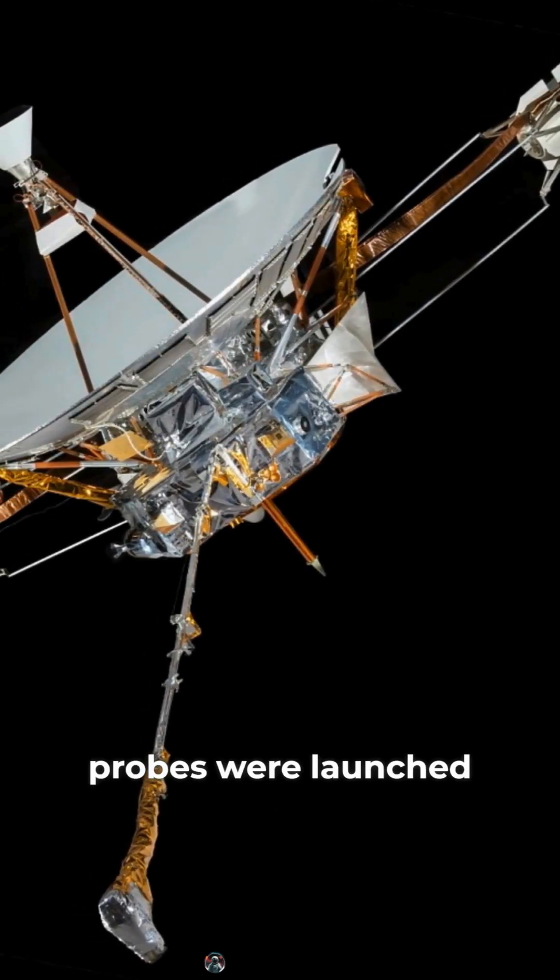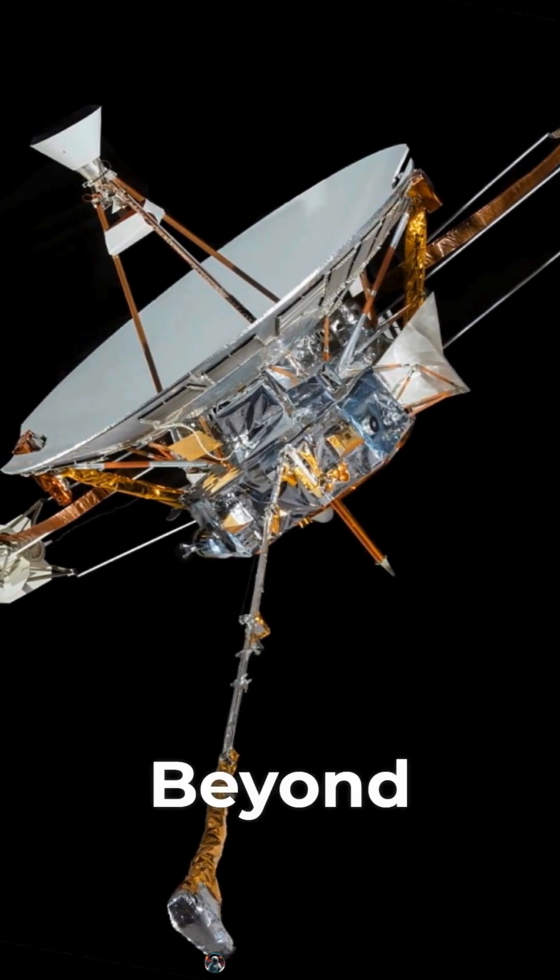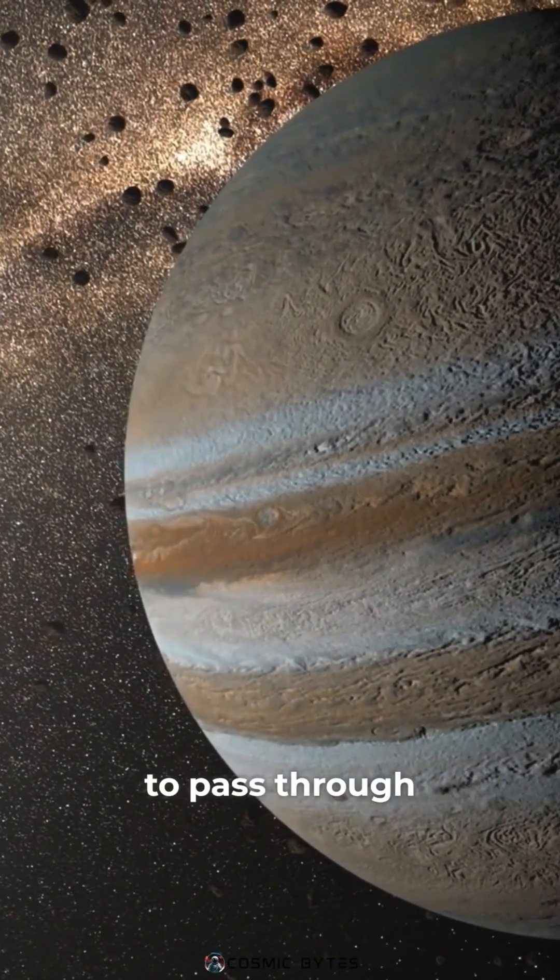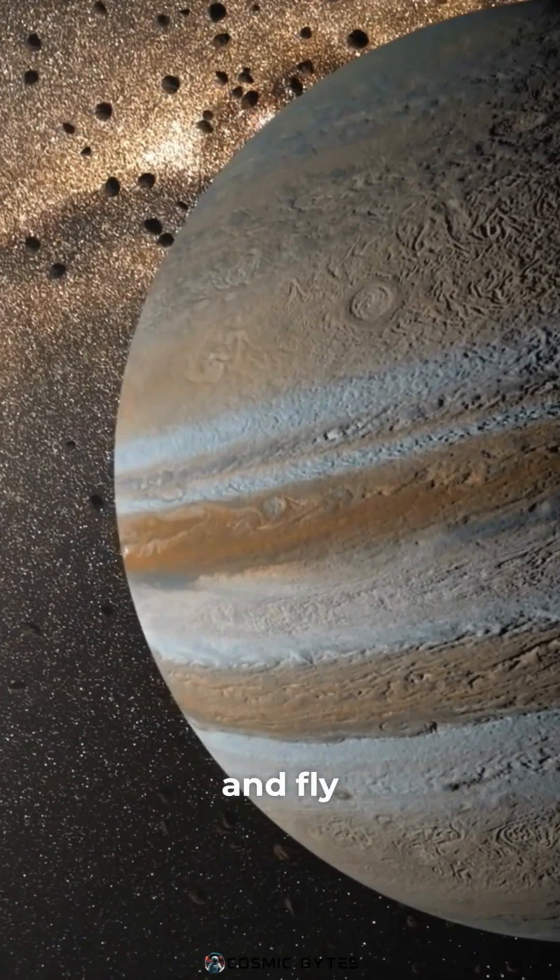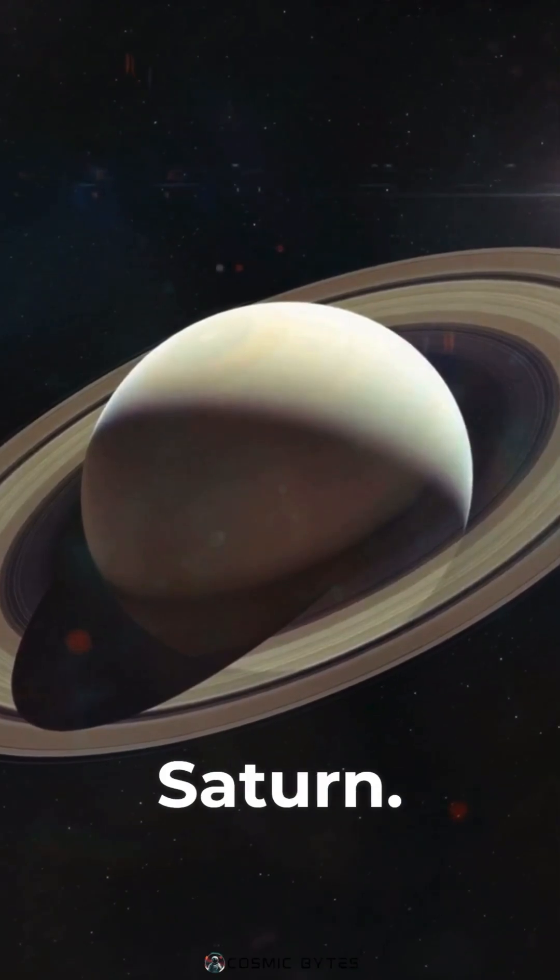NASA's Pioneer 10 and 11 probes were launched in the early 1970s to explore the outer planets and beyond. Pioneer 10 became the first human-made object to pass through the asteroid belt and fly by Jupiter, while Pioneer 11 made the first direct observations of Saturn.